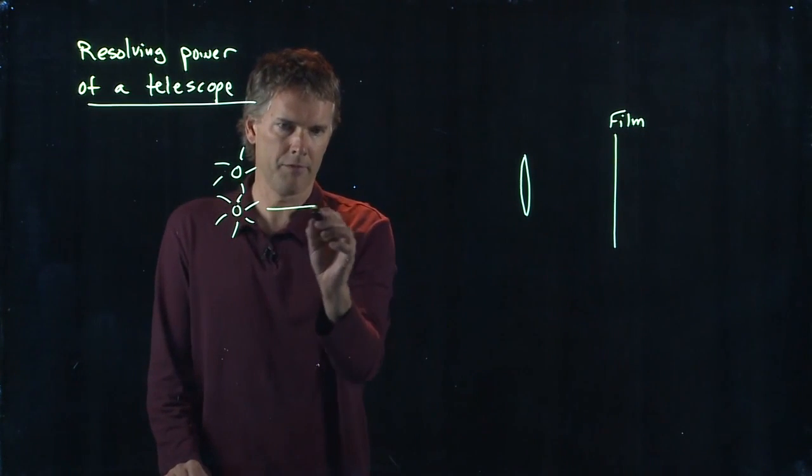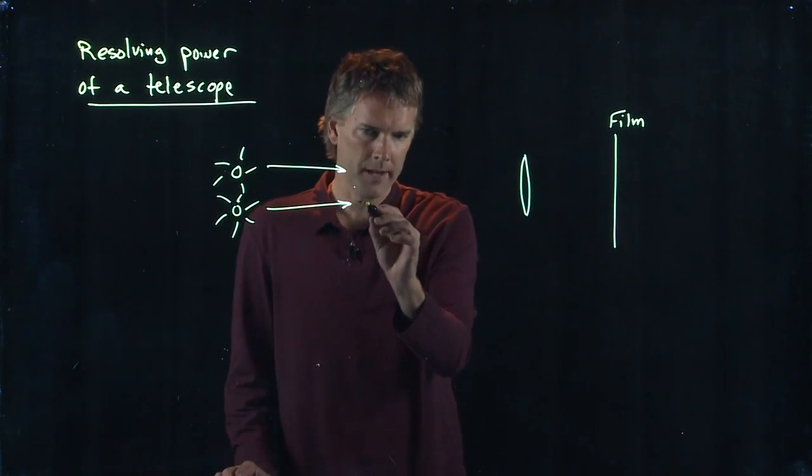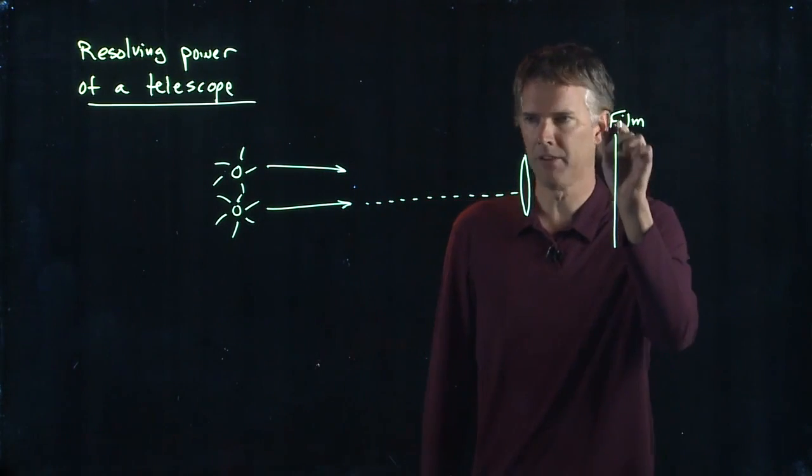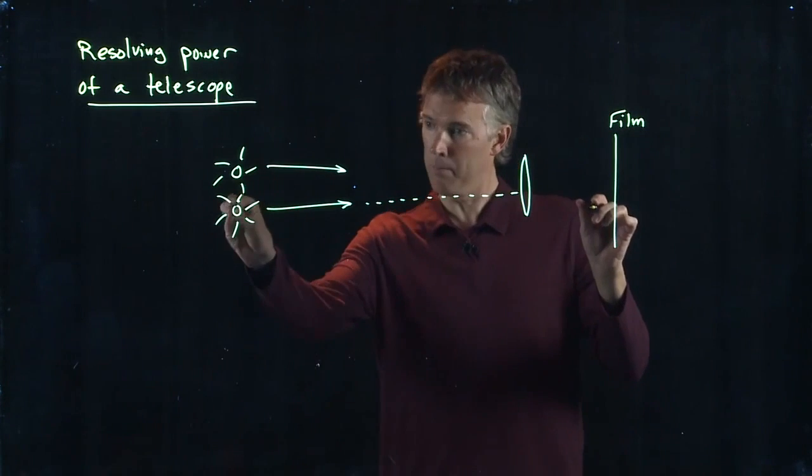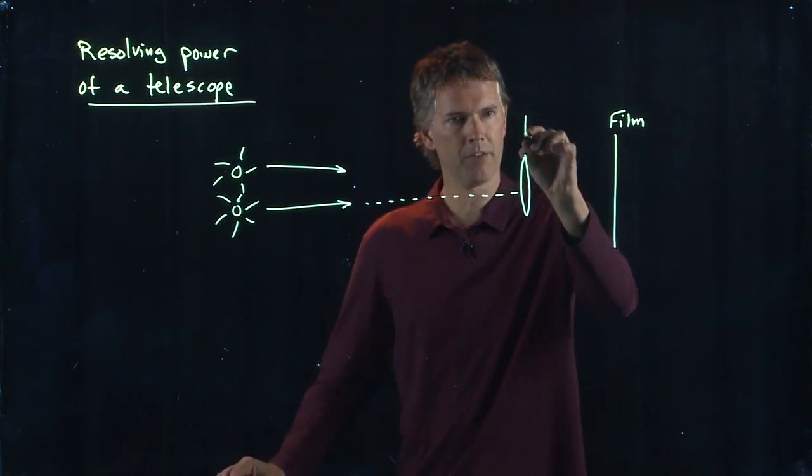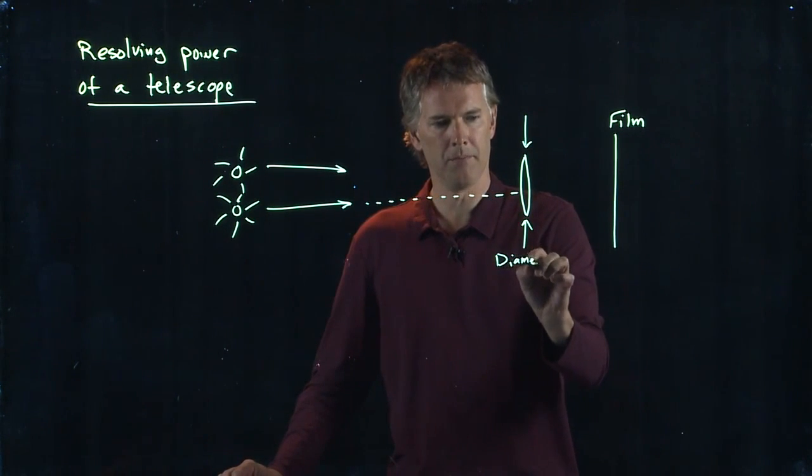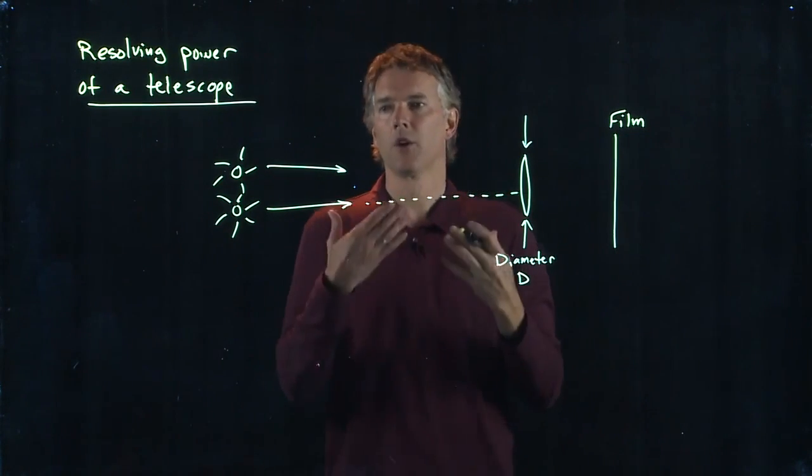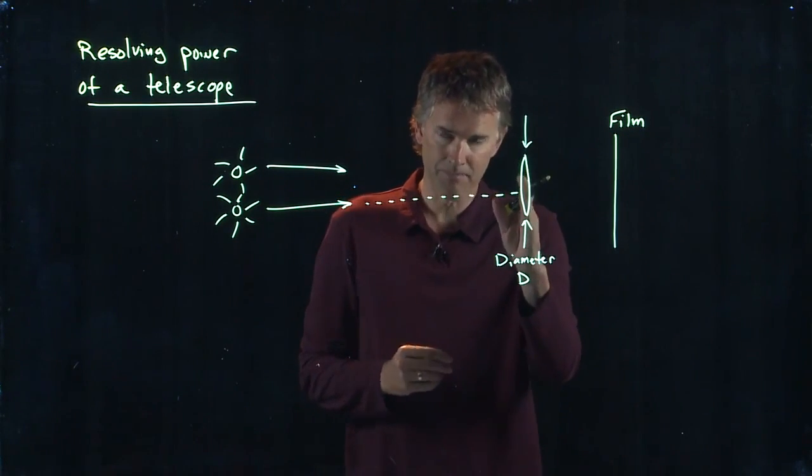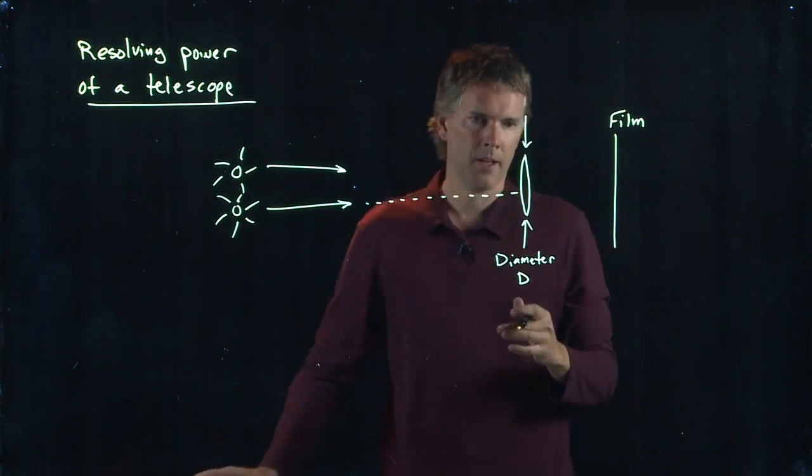Light rays from each star come to our telescope, and when those light rays come into our lens, they don't just make a single point on the film. A point source here doesn't just become a point source here, because there is some diameter D of this system that causes diffraction. Anytime light goes through a slit, no matter how big it is, it could be a lens, it could be some aperture, it's going to diffract.